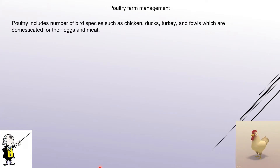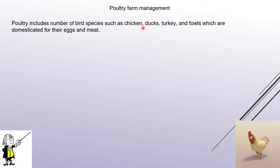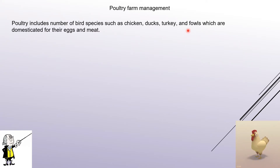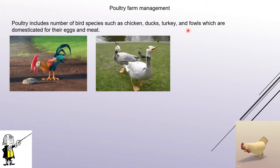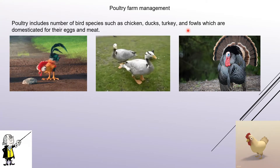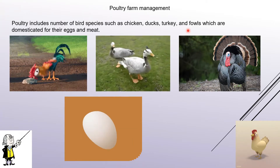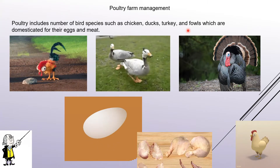Poultry farm actually includes all birds. It is not only confined to chicken but also includes ducks and turkey. This group of birds is together called fowl, which are domesticated for their eggs and meat. So your poultry birds include chicken, ducks, and turkey, specially domesticated for egg and meat.